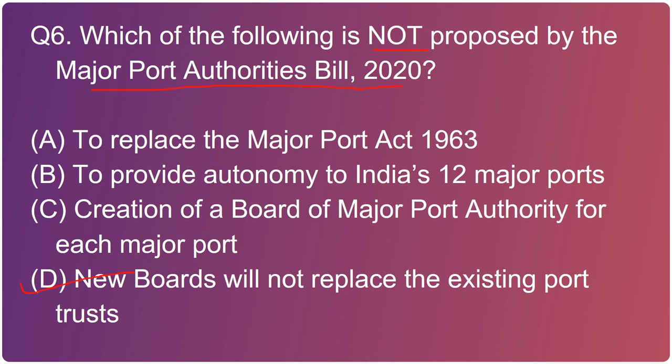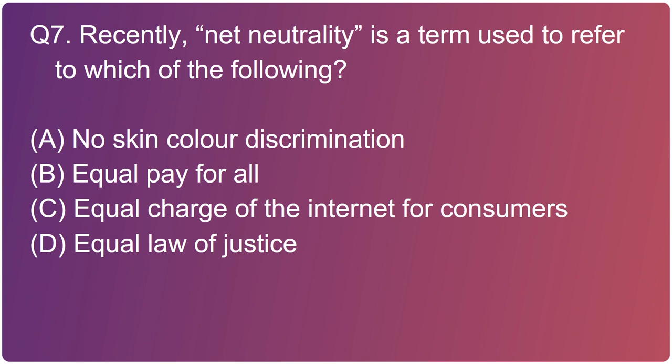Going to the seventh question: recently in the news, net neutrality is a term used to refer to which of the following? The right option is option C - equal charge of the internet for consumers. It means that the government and internet service providers treat all data on the internet equally and do not differentiate or charge consumers for giving preferential treatment to certain websites.